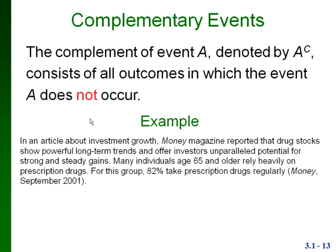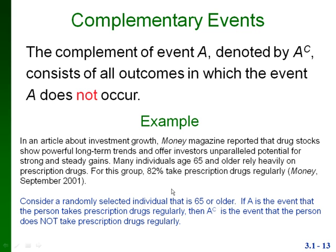Here's an example. In an article about investment growth, Money Magazine reported that drug stocks offer investors strong and steady gains. Many individuals age 65 and older rely heavily on prescription drugs — for this group, 82 percent take prescription drugs regularly. Consider a randomly selected individual 65 or older. If A is the event that the person takes prescription drugs regularly, then the complement of A is the event that the person does not take prescription drugs regularly.